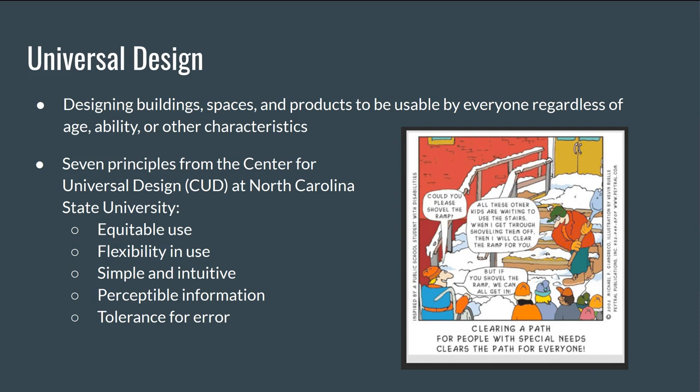Sixth, low physical effort — the design can be used efficiently, comfortably, and with a minimum of fatigue; for example, doors that open automatically for people with a wide variety of physical characteristics. And lastly, size and space for approach and use — appropriate size and space is provided for approach, reach, manipulation, and use, regardless of the user's body size, posture, or mobility. A flexible work area designed for use by employees who are left- or right-handed and have a variety of physical characteristics is an example.